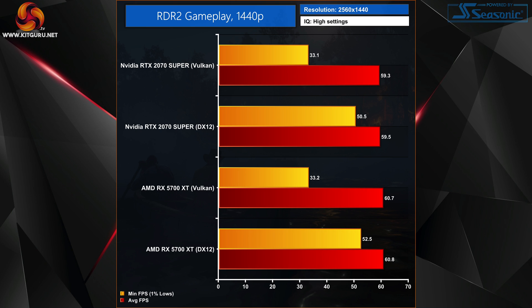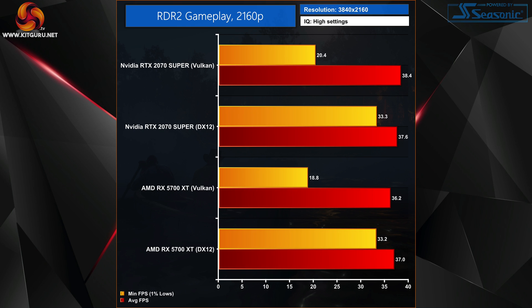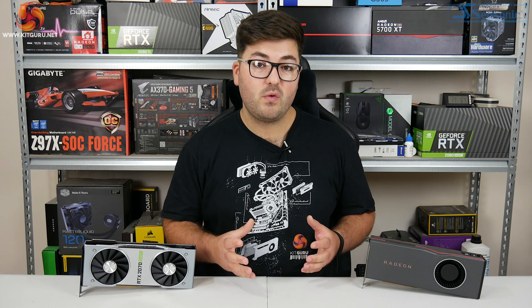Rounding out with 4K real-world gameplay testing, it's more of the same — Vulkan delivers far worse one percent low performance. That said, neither card provides an enjoyable experience at 4K with either API, so for a 2070 Super or 5700 XT, sticking to 1440p is the realistic choice.